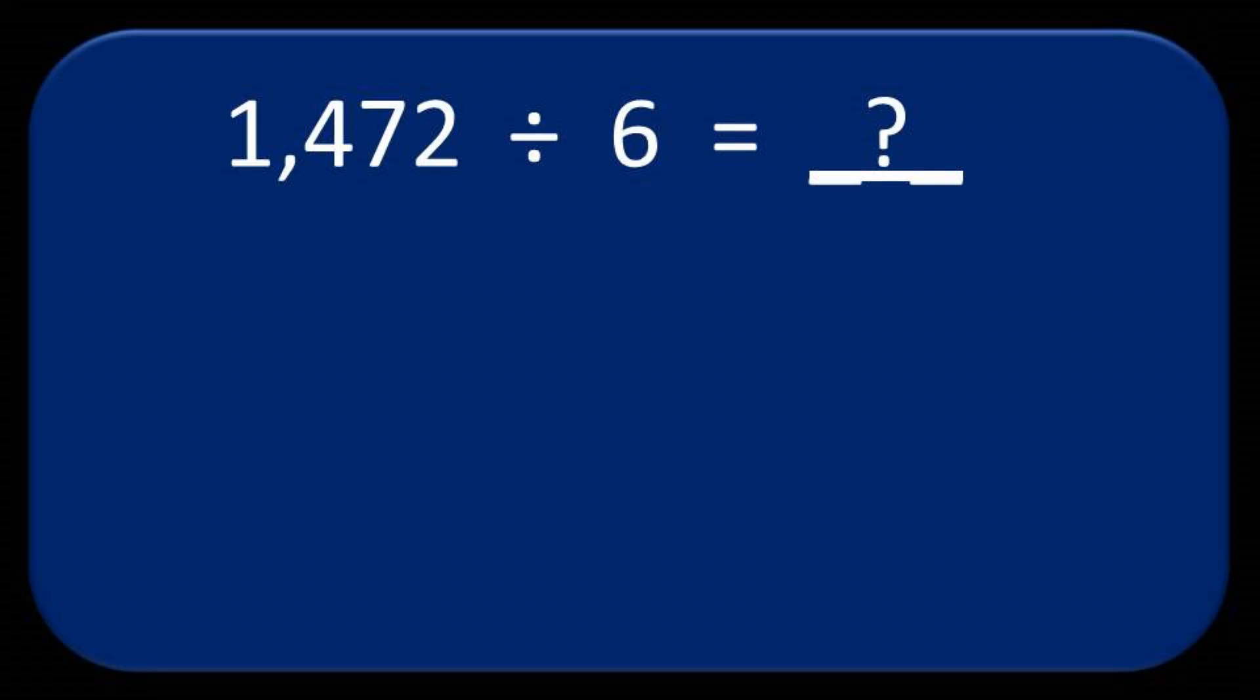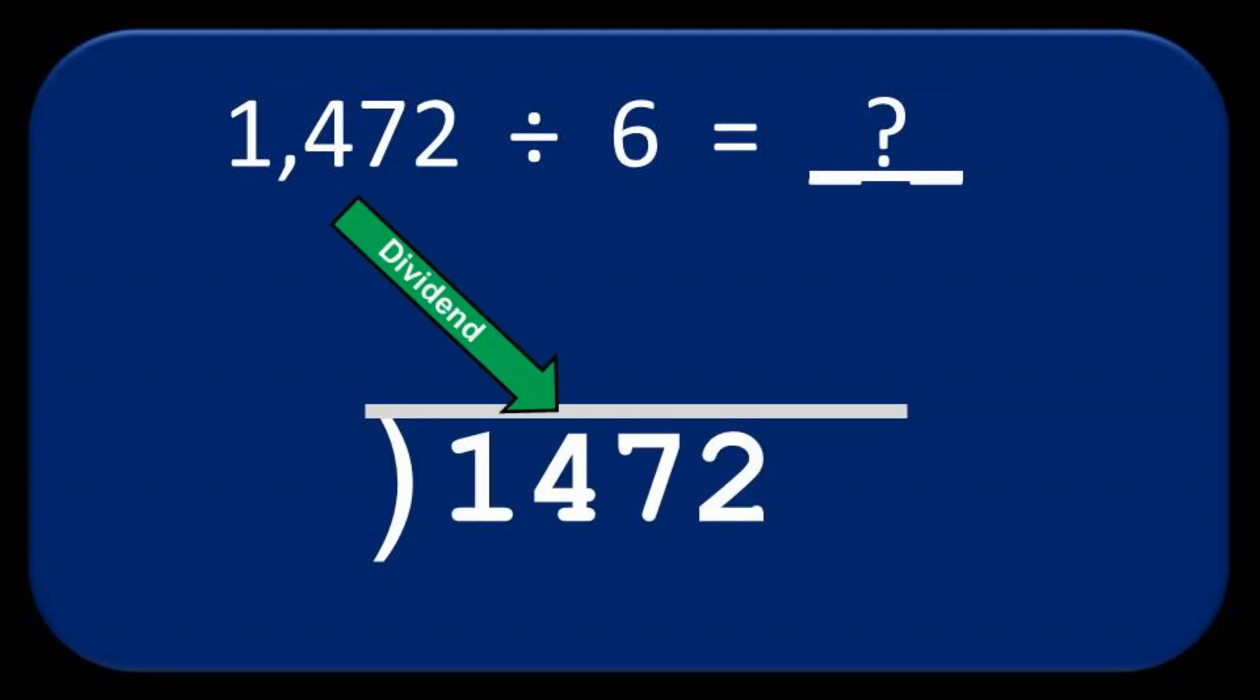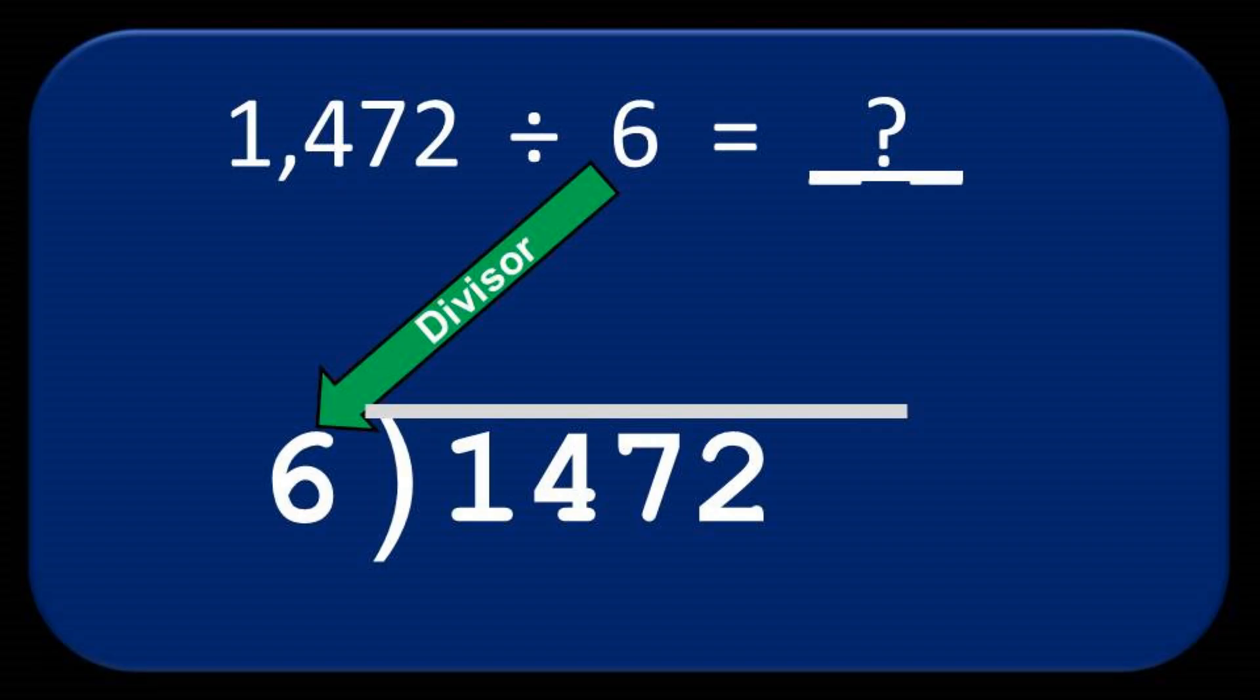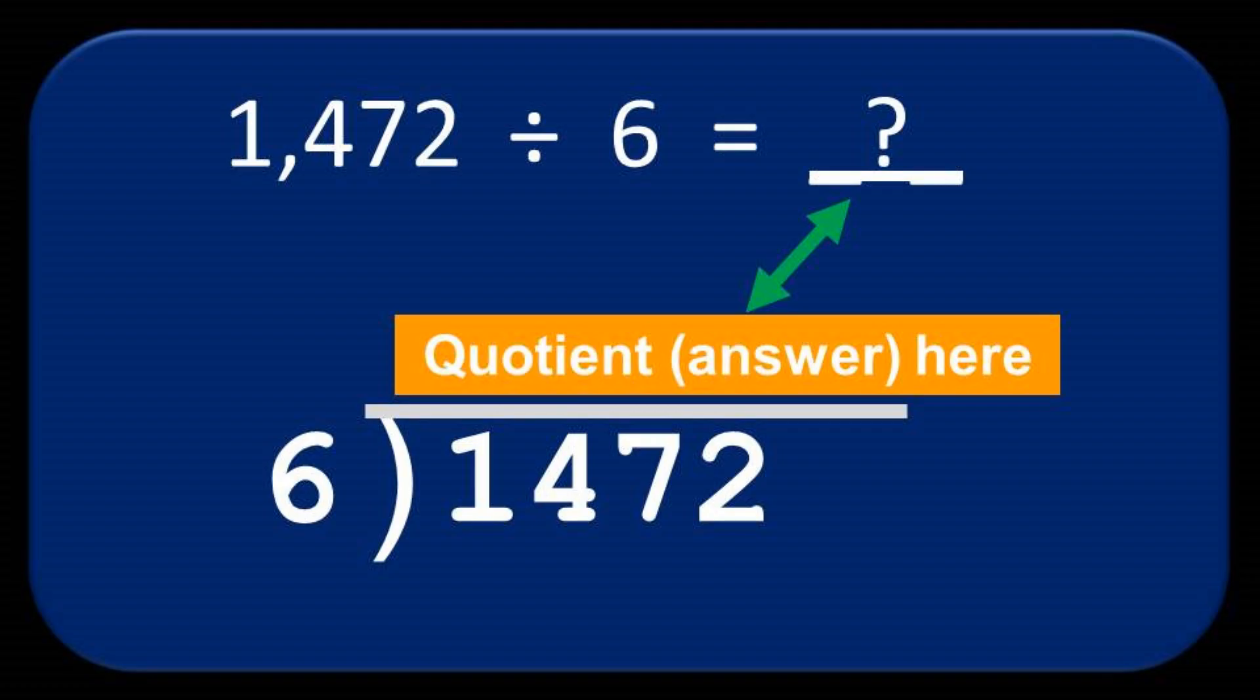The first thing to do is to set up the classic long division layout by drawing a rooftop symbol and writing out the dividend underneath it. Then the divisor is written out to the left. As we work, we'll slowly assemble our answer, the quotient, on top of the rooftop.